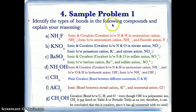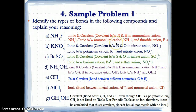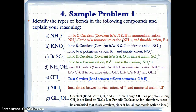Now let's try sample problem one — identify the types of bonds and explain why. (A) NH4Cl: NH4 plus is on Table E as ammonium, and Cl gains one electron to become Cl minus. So we have ionic and covalent bonds — covalent between the N and H atoms (nonmetals) in ammonium, and ionic between NH4 plus and Cl minus. (B) KNO3: K loses one electron to become K plus, and NO3 minus is on Table E as nitrate. Ionic and covalent bonds — covalent between N and O in NO3 minus, and ionic between K plus and NO3 minus.